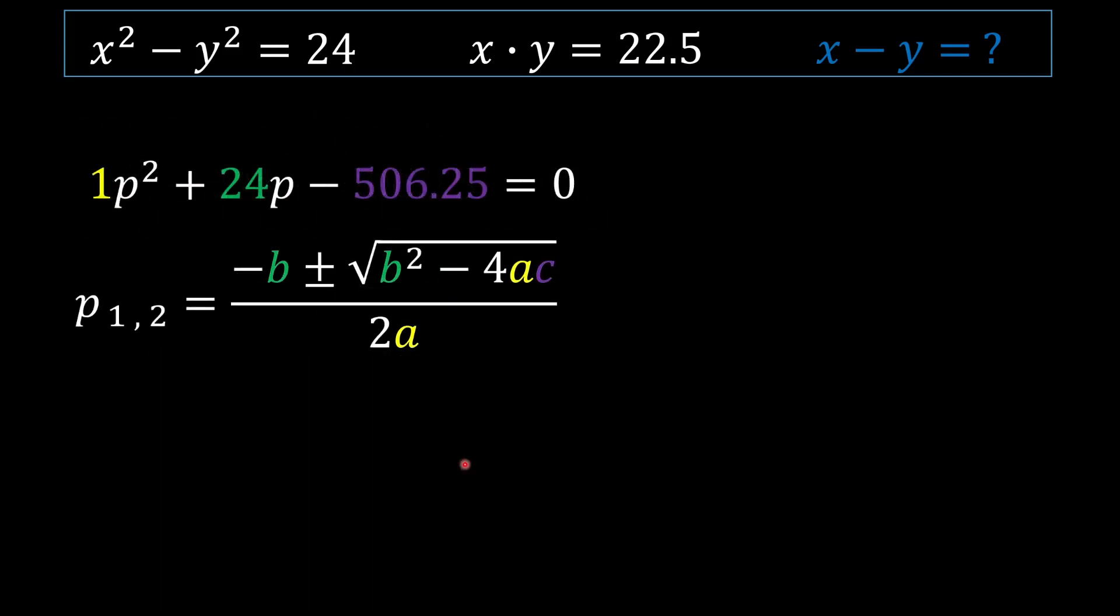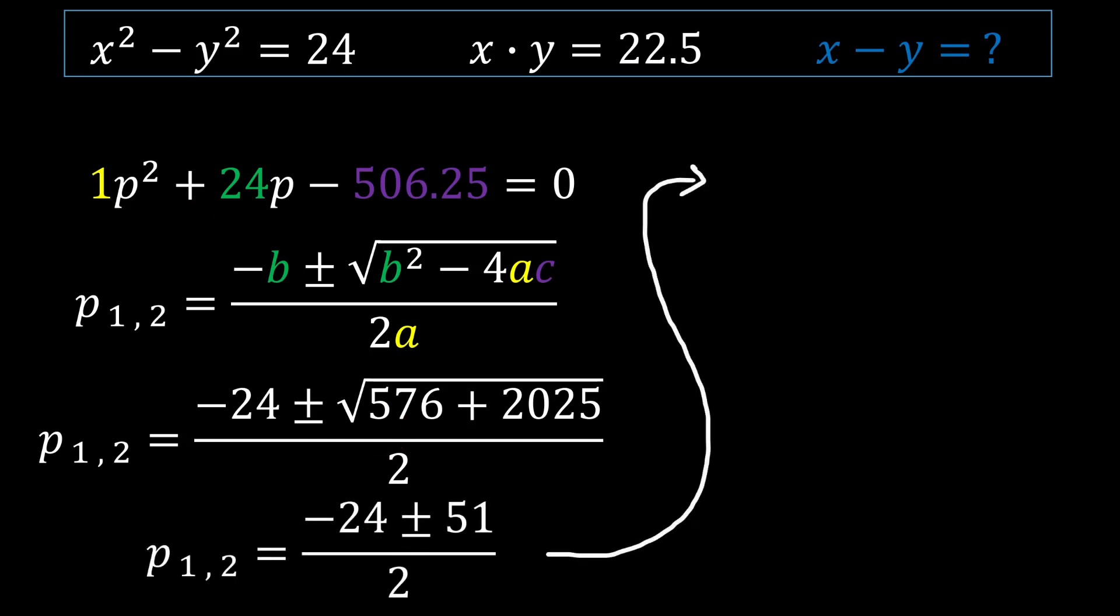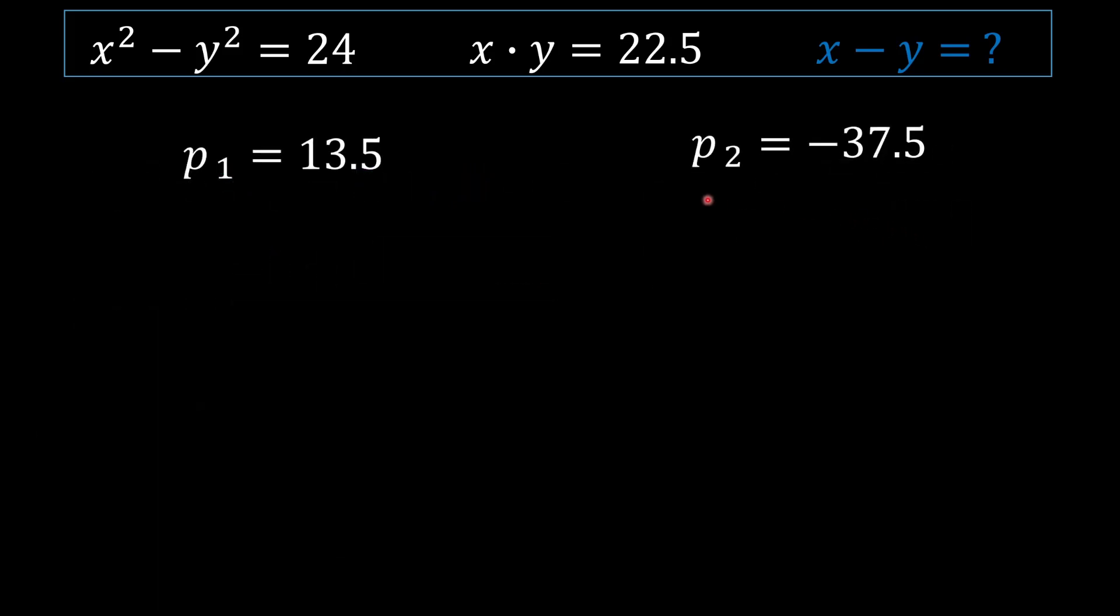Right, applying the quadratic formula into, you're putting basically the variables inside the quadratic formula will lead you to two different p values which you're going to see on your screen. One p value is being 13.5 and the other p value is negative 37.5. Right, so with these two p values that we obtain using the quadratic formula, we know that p is equal to y squared for both p values, right?